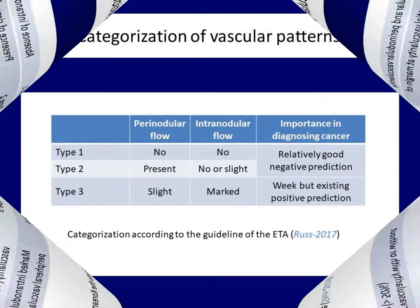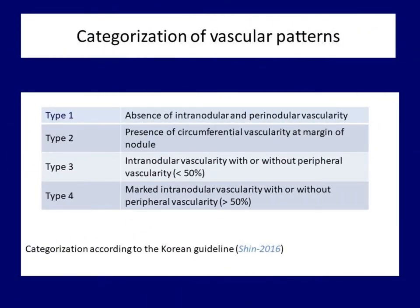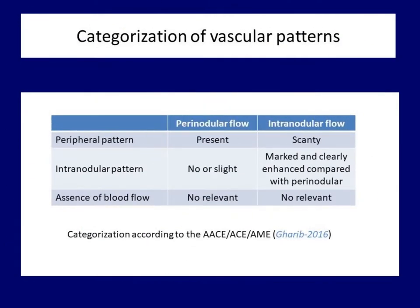The classification of the Korean Society of Thyroid Radiology differs from the former by dividing intranodular patterns into two subgroups: in the first, the degree of intranodular flow is lower than 50%, while in the second it is higher than 50%. The third classification was suggested by the AACE, which is very similar to the former ones but does not number the subgroups. The dominant vascularity defines the categorization of a nodule, and I prefer this approach in ultrasound reports because, as opposed to numbering, it is clear.